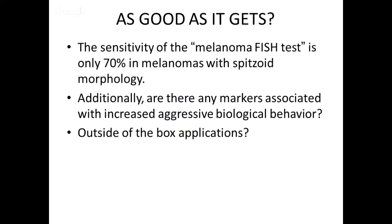But is this as good as it gets? The sensitivity for the melanoma FISH test — that probe set — only has 70% sensitivity for spitzoid lesions, which is actually the most diagnostically challenging and ambiguous category. 70% is really not good enough — 30% of melanomas it's going to miss. Additionally, are there any other markers associated with aggressive biological behavior? Is there a FISH profile that's prognostic? And are there any outside-of-the-box applications?